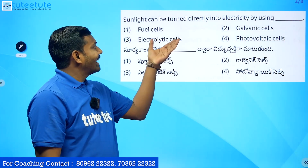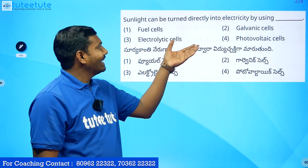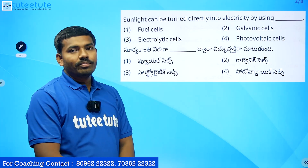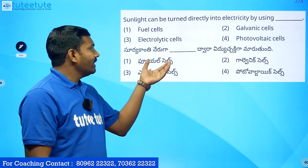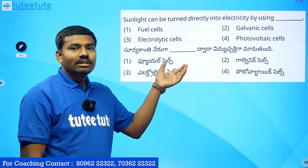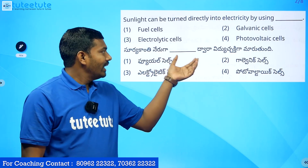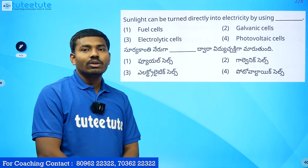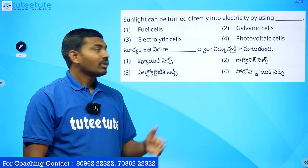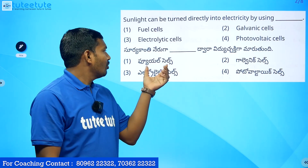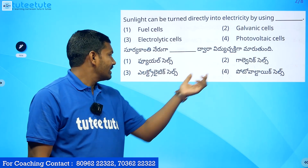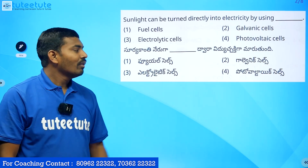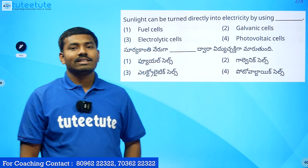Question: Sunlight can be turned directly into electricity by using — fuel cells, galvanic cells, electrolytic cells, or photovoltaic cells?